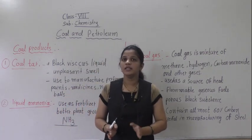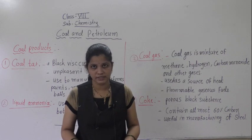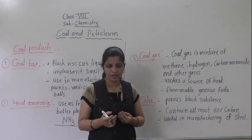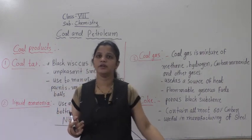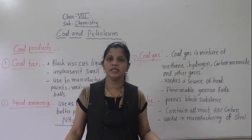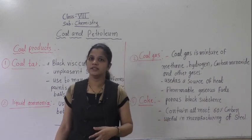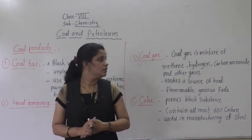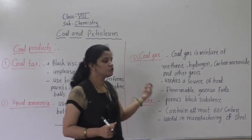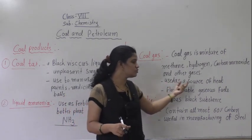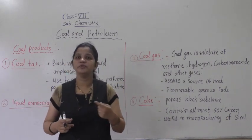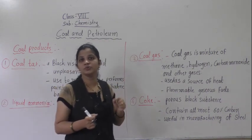So coal gas is a mixture of many different gases. There are also some hydrocarbons present. Hydrocarbons we will learn about afterwards — it is the combination of carbon. The hydrocarbon series includes methane, ethane, propane, butane, and pentane — that we will learn later. This coal gas is used as a source of heat.